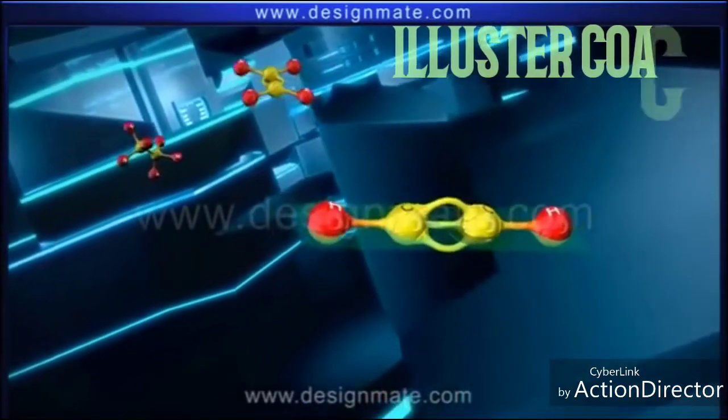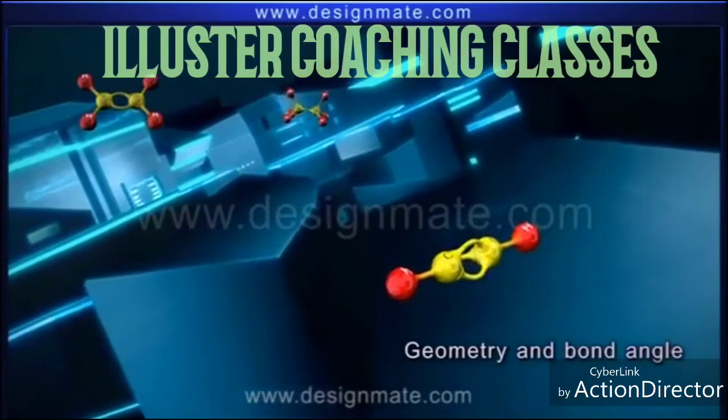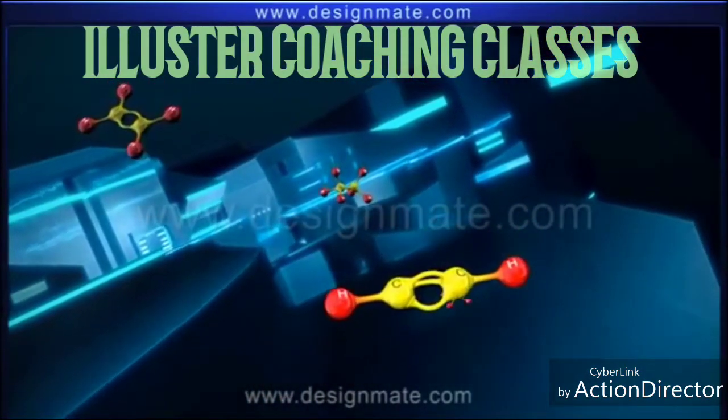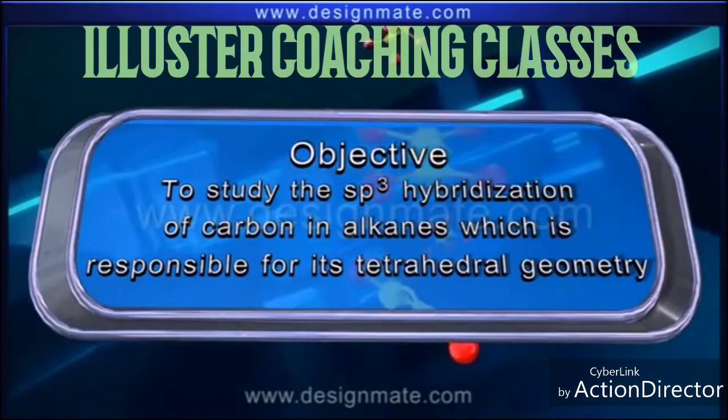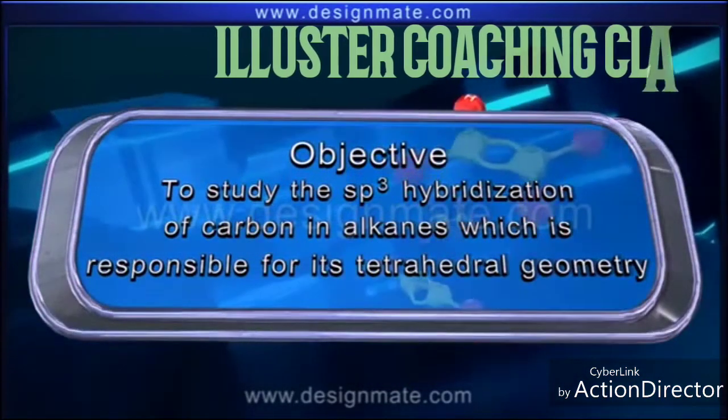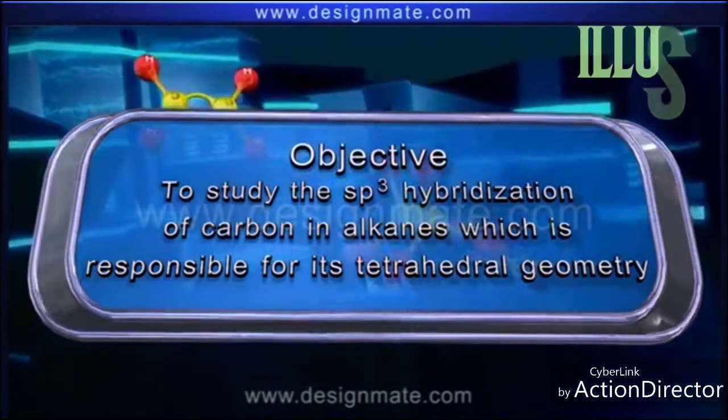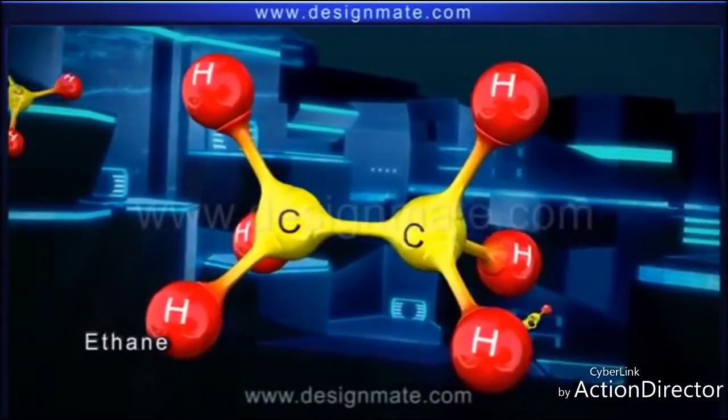All these three hydrocarbons differ from each other in geometry and bond angle due to a difference in the state of hybridization of carbon atoms in them. In this topic, we will study the sp3 hybridization of carbon in alkanes and how it is responsible for its tetrahedral geometry. We will explain it by taking ethane again as an example.